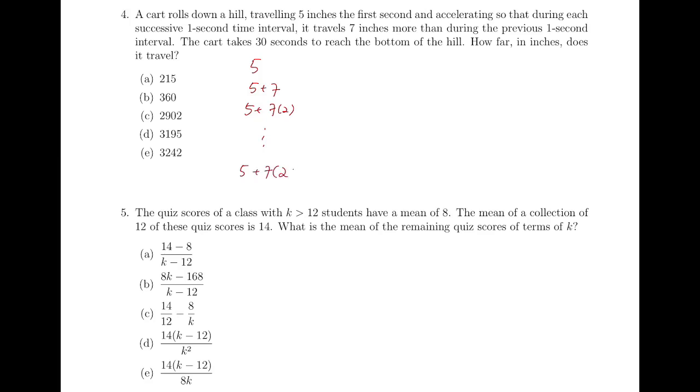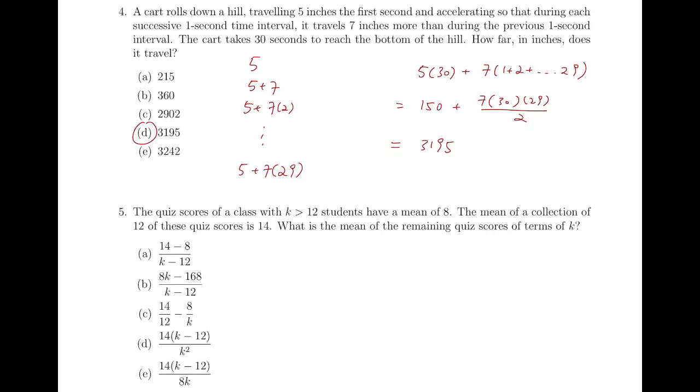So the sum is 5 times 30 plus 7 times 1 plus 2, adding up to 29, and that's equals to 150 plus 7 times 30 times 29 over 2, and that's 3195, which is D.